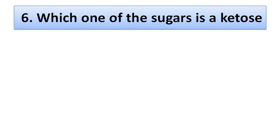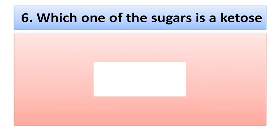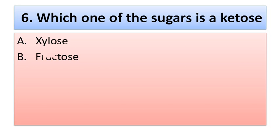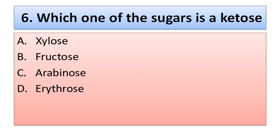Question number six: which one of the sugars is a ketose? Option A is xylose, option B is fructose, option C is arabinose, and the last option is erythrose. The correct option is fructose, option B.